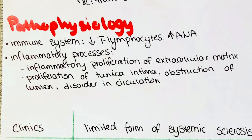The pathophysiology is not completely understood yet, but a few processes are clear. As a sign of the immunological reaction we can observe a decrease in T-lymphocytes in the blood, as well as an increase in antinuclear antibodies, which are characteristic for autoimmune diseases. Also, inflammatory processes can be seen — for example, the inflammatory proliferation of the extracellular matrix and the tunica intima of blood vessels, which is the innermost layer. This proliferation of the latter can lead to an obstruction of the lumen, which in turn leads to circulation disorders and potentially ischemia of internal organs.